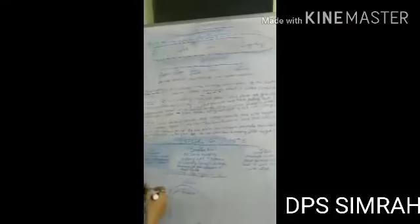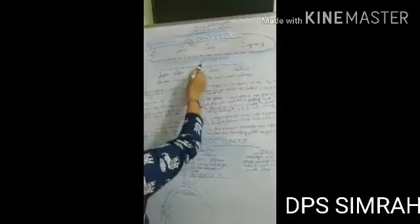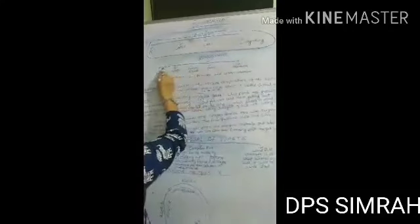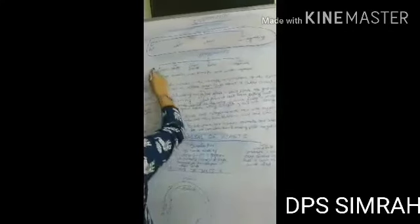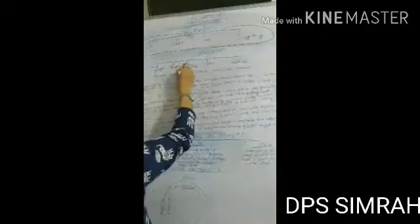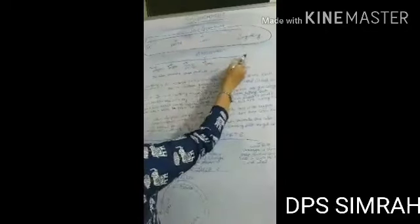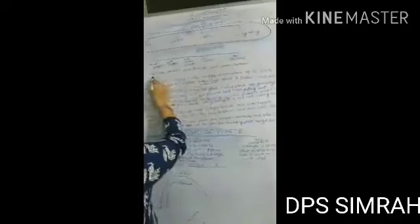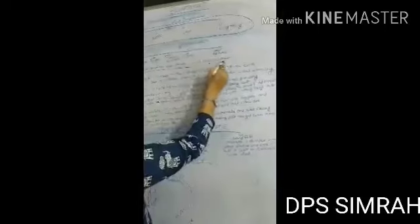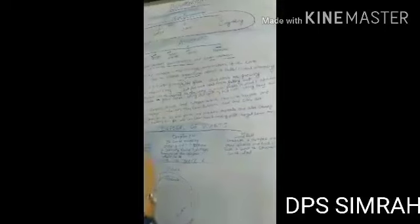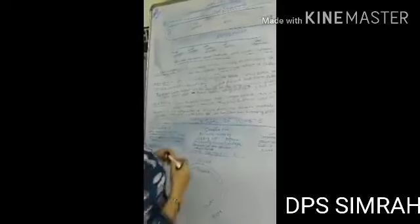But how is the atmosphere formed? Atmosphere is the combination of gases like nitrogen, oxygen, carbon dioxide, ozone and methane. It also contains dust particles and water vapour.